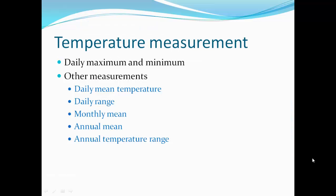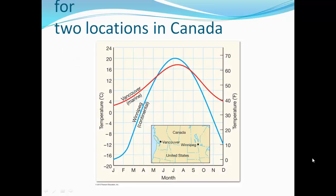Daily maximum and minimum temperature measurements are important, along with the average temperature each day, the daily range, the monthly mean, the annual mean, and the annual temperature range. Comparing two Canadian cities: Vancouver never gets nearly as cold as Winnipeg, but Winnipeg gets warmer in summer. Vancouver is near the ocean while Winnipeg is very continental. Land heats more and cools faster than water, so continental regions have greater temperature variation over the year, while marine environments are much more moderate.